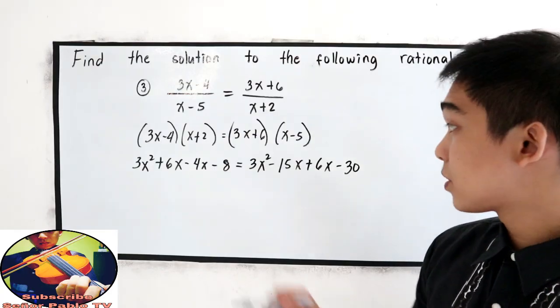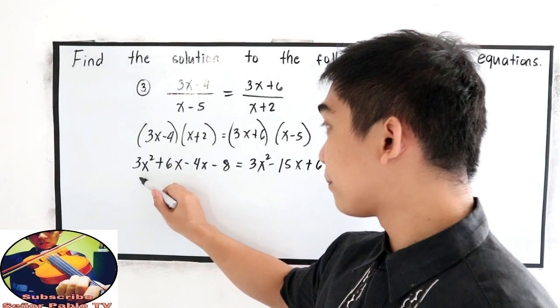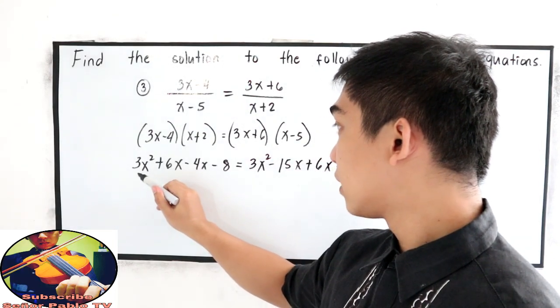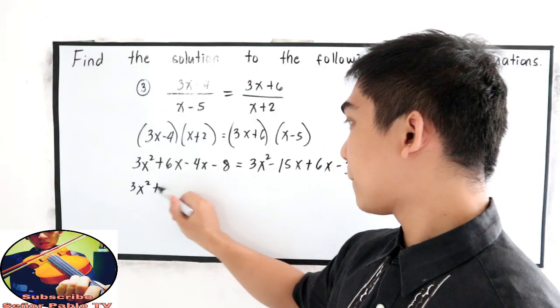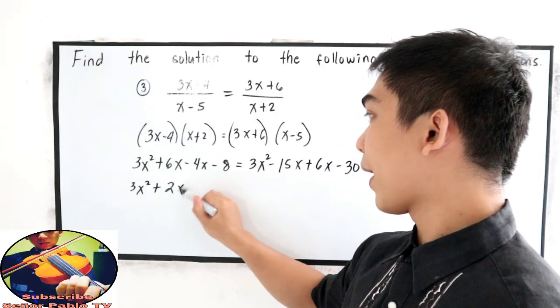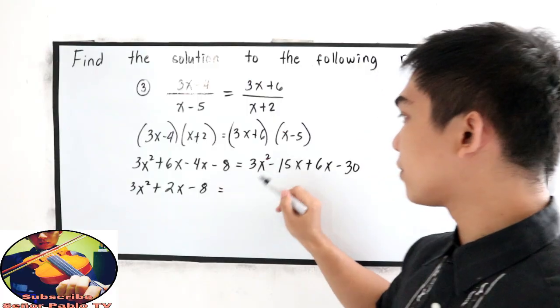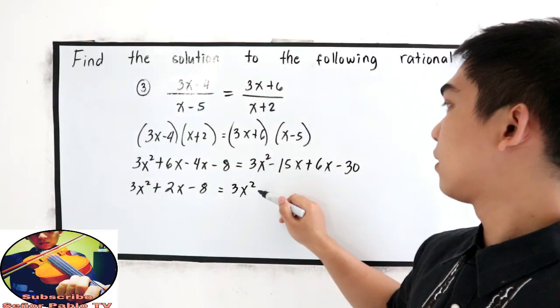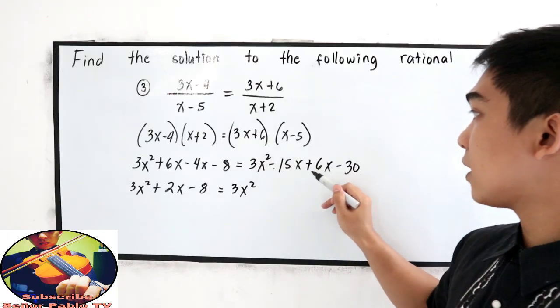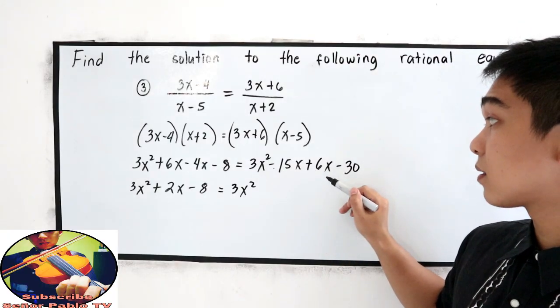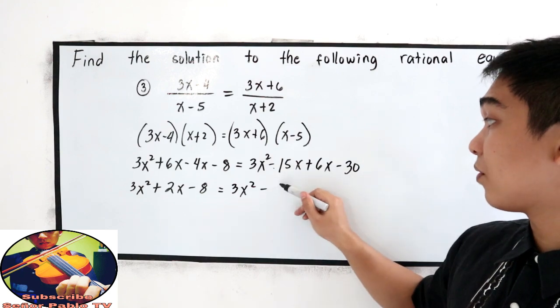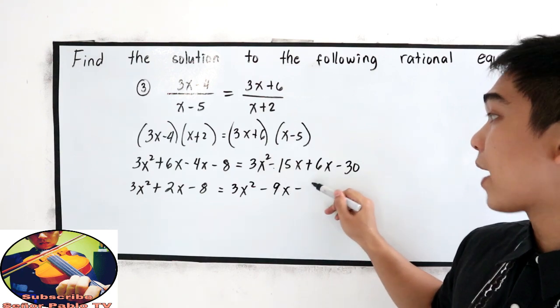Now, combine like terms. This will become 3x squared, plus 2x minus 8, is equal to 3x squared, negative 15x plus 6x is negative 9x, minus 30.